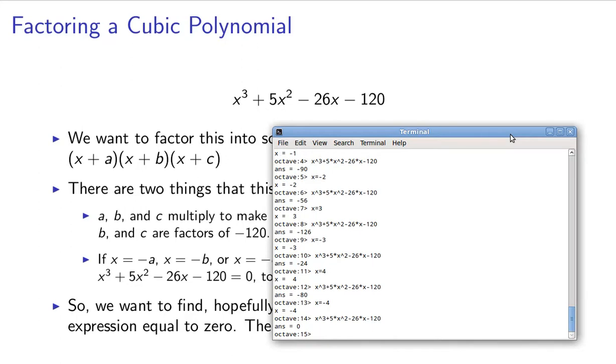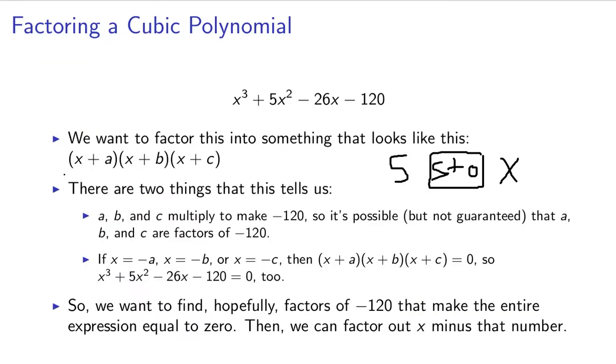Now X equals negative 4 gives us a 0. So that means that A, B, or C, one of those three, has to be equal to positive 4. But that means, in particular, that we can factor out X plus 4 from this entire expression. Because one of these three pieces is going to be equal to X plus 4.